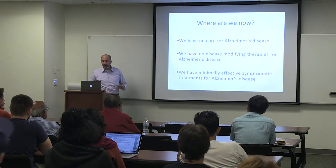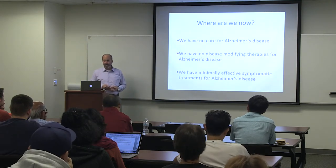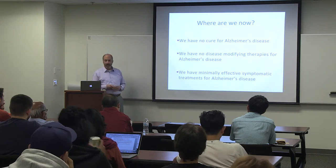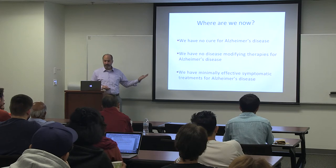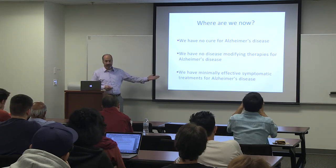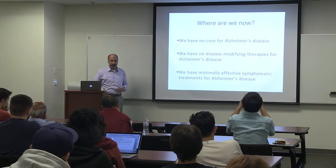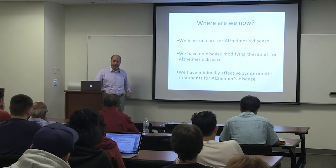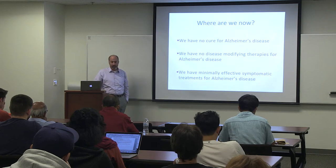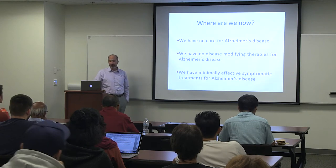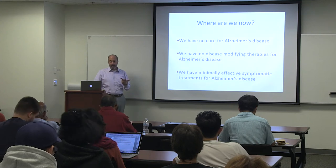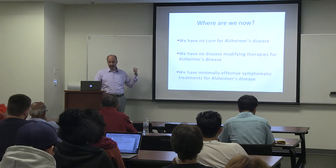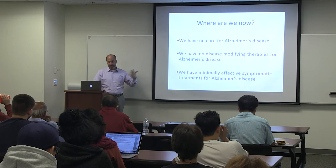The big problem is that we really don't have good ways to treat this disease. We have no cures and really no way to modify the disease course. The treatments we do have available are symptomatic and they really don't work very well for most people. That is why those numbers are so remarkable — it is going to get out of control.